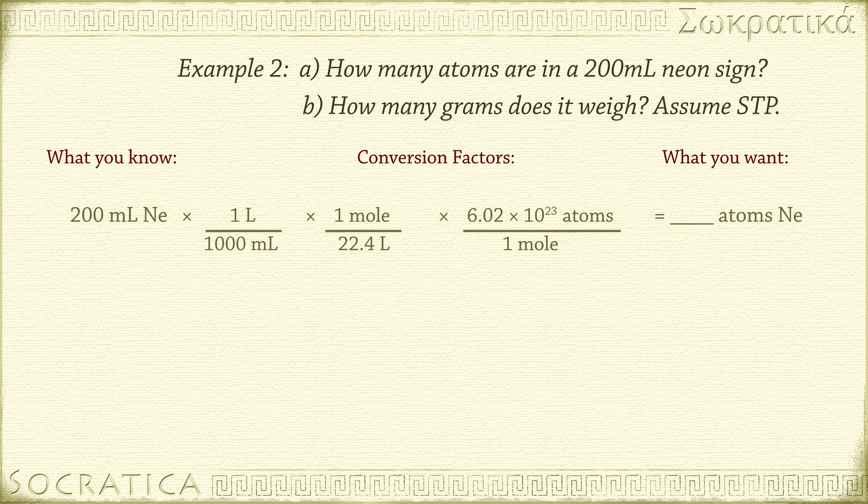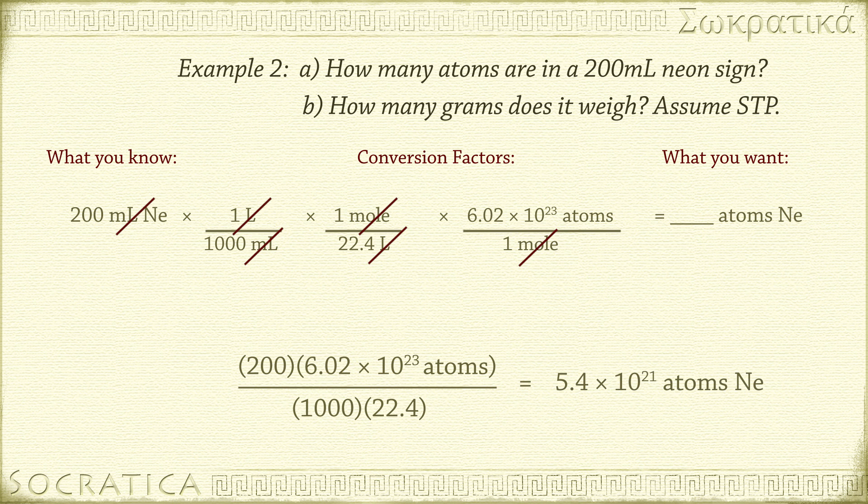200 milliliters of neon times 1 liter per 1,000 milliliters times 1 mole of neon per 22.4 liters of neon times 6.02 times 10 to the 23rd atoms of neon per 1 mole of neon equals some number of atoms of neon. Check to make sure our units cancel. Milliliters cancel, liters cancel, and moles cancel, leaving atoms of neon. 200 times 6.02 times 10 to the 23rd divided by 1,000 times 22.4 equals 5.4 times 10 to the 21 atoms of neon.